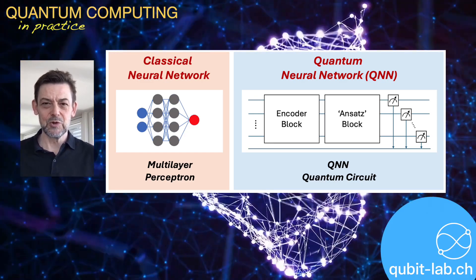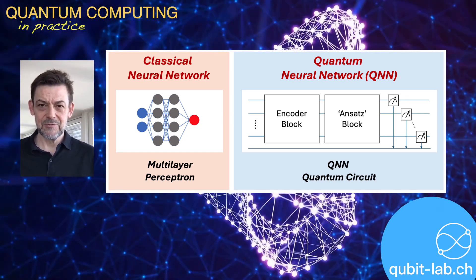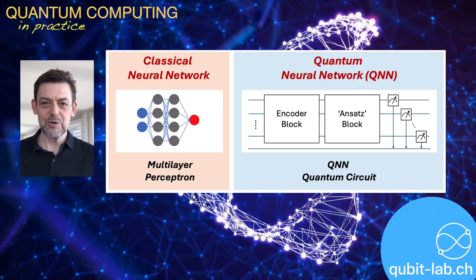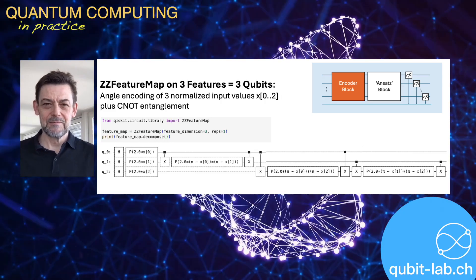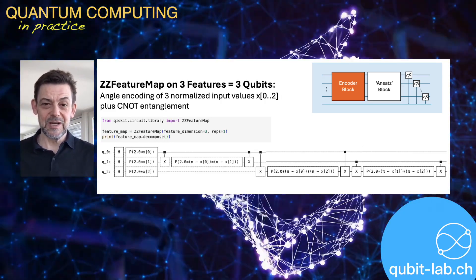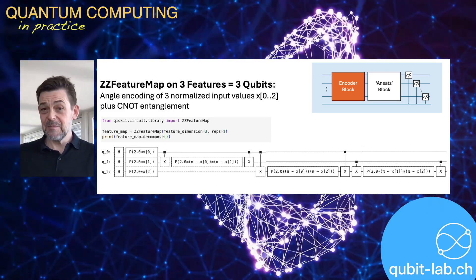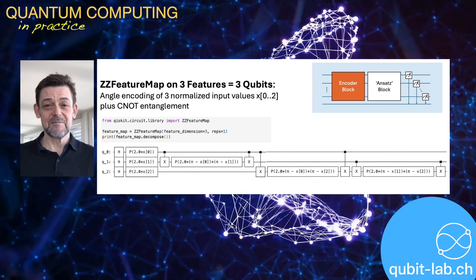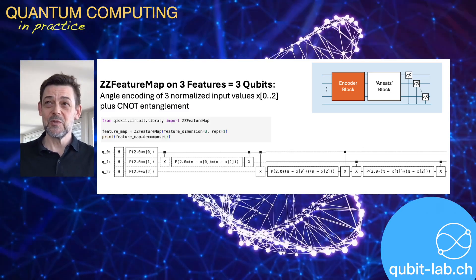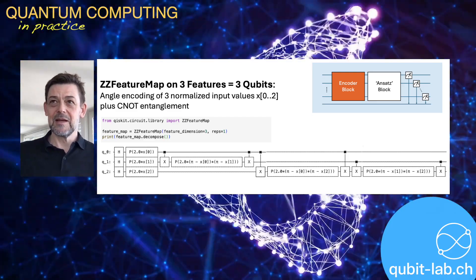A quantum neural network, on the other hand, is first of all a trainable quantum circuit. It consists of two blocks: the static encoder and the trainable ansatz block. In the encoder block, the classical features are first encoded into a quantum state. Quantum gates translate the input values into rotations of qubits, setting up the initial quantum state for processing. This step effectively converts numerical data into a rich quantum representation, ensuring the model has the right foundation before moving on to the ansatz block.